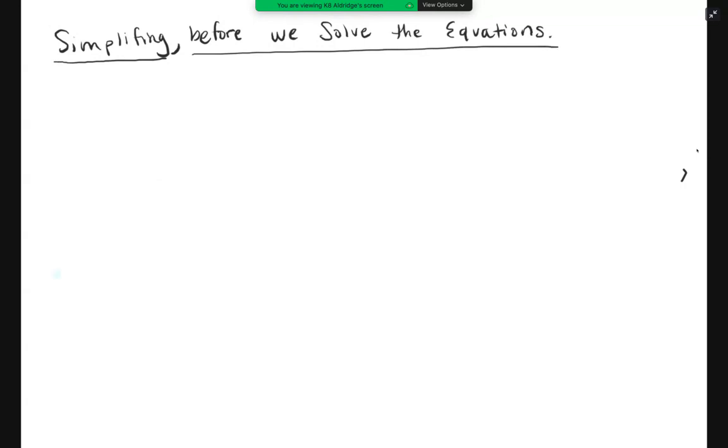Again, you are going to turn these in to Google Classroom. All right, so the first problem that we start off with today is 2x plus 3x plus 5 equals negative 15.